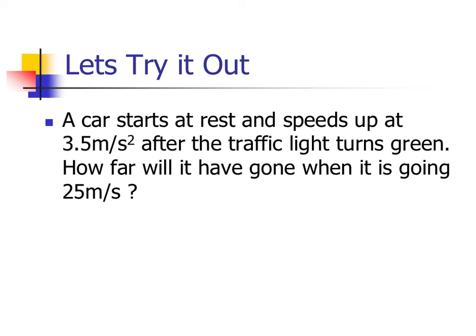So let's put some together and try these out. If a car starts at rest and speeds up at 3.5 meters per second squared after the traffic light turns green, how far will it have gone when it is going 25 meters per second, which is roughly around 50, 60 miles an hour.